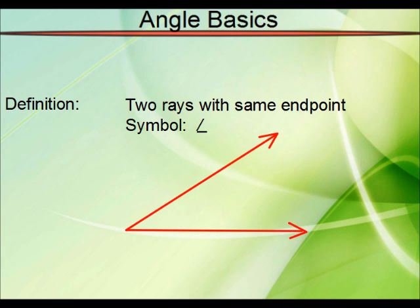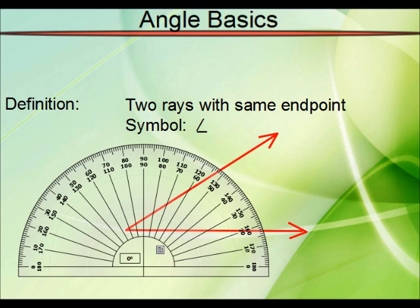Now let's say you wanted to measure an angle. What you do is you get what is called a protractor. It looks something like this. And you should note that a protractor has numbers on the inside and on the outside. What you'll want to do is you're only going to use one row of numbers.